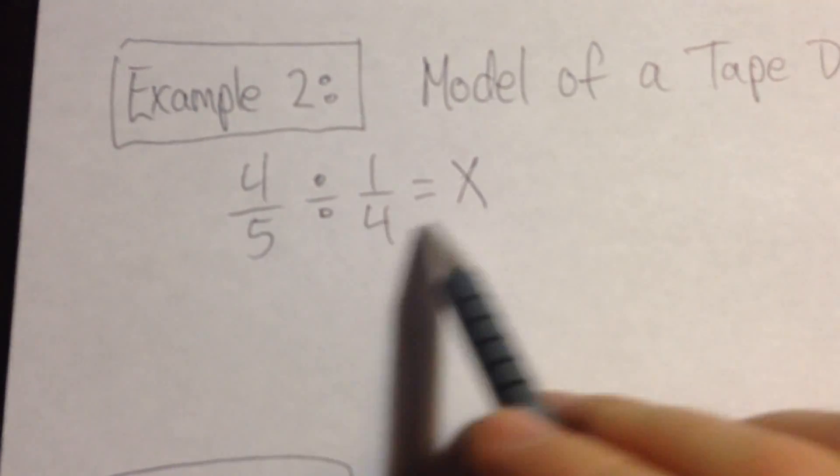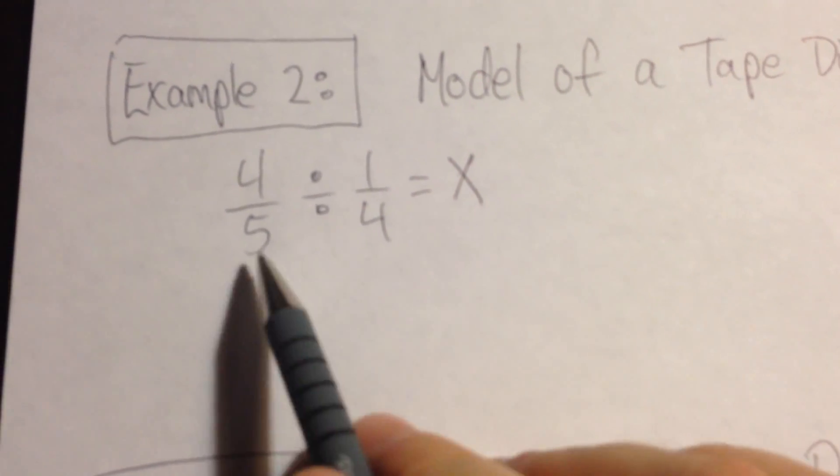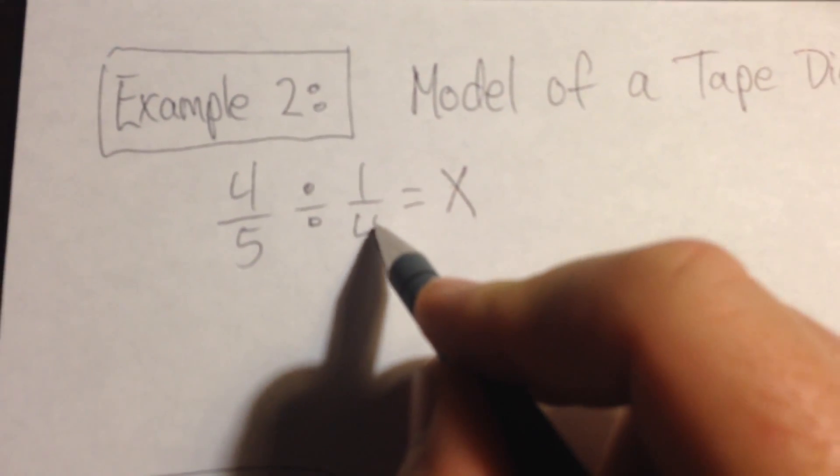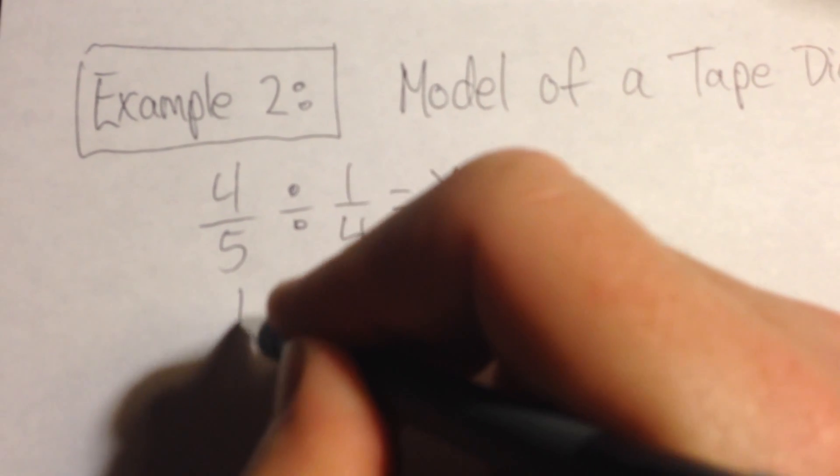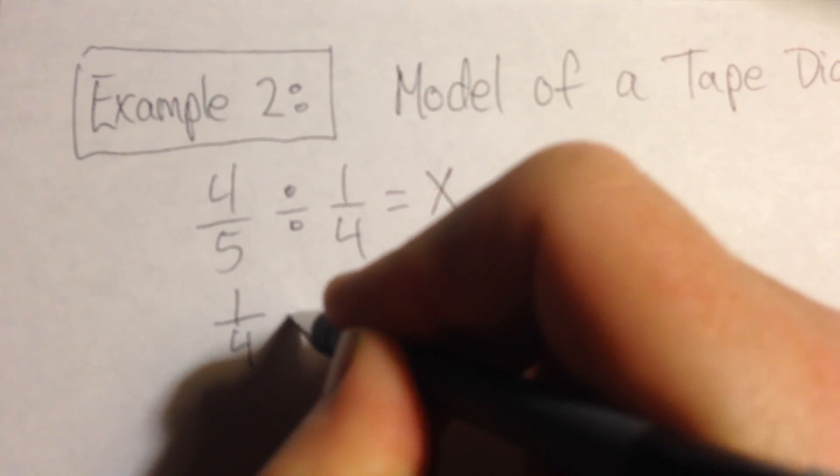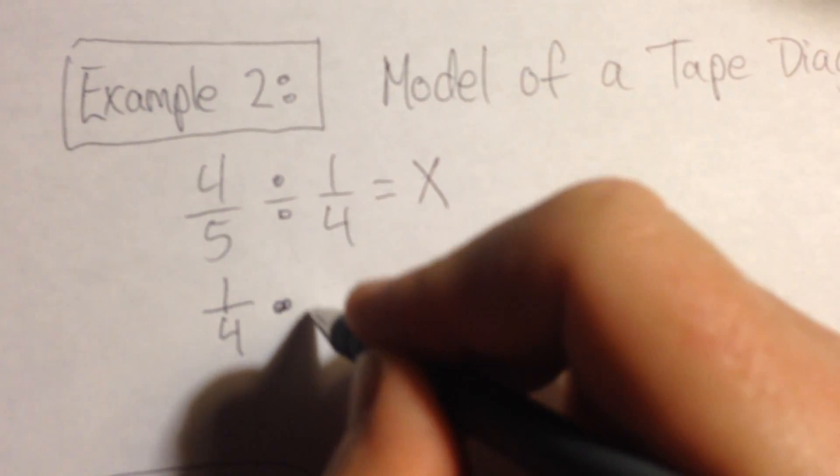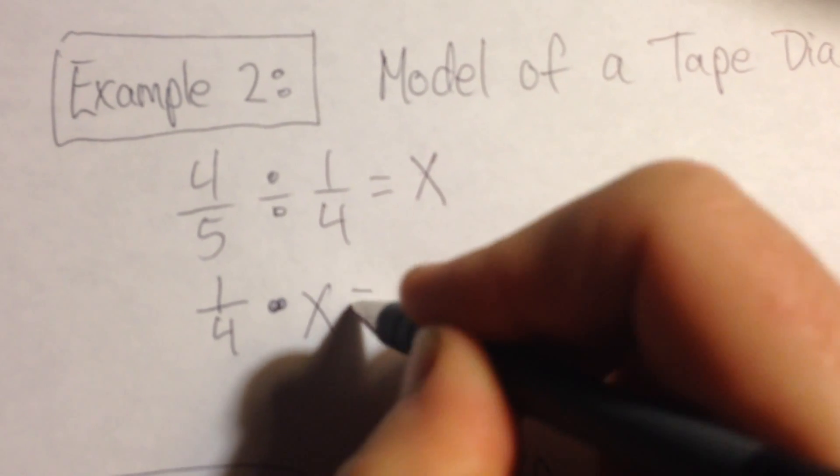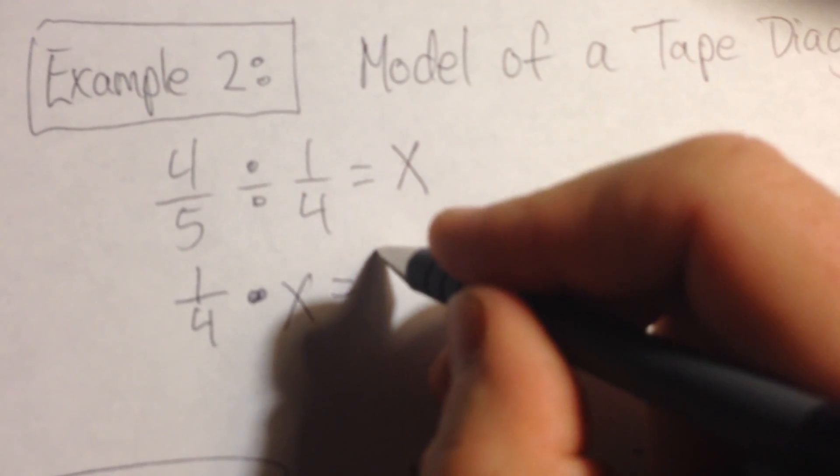We want to take this division equation and rewrite it as multiplication. So we're going to take our divisor, which is one-fourth, multiply that by our quotient, which was x, and we're going to come up with our dividend, which is four-fifths.